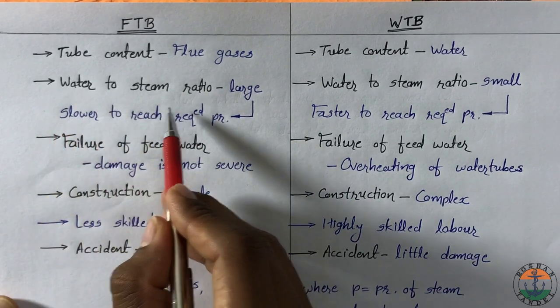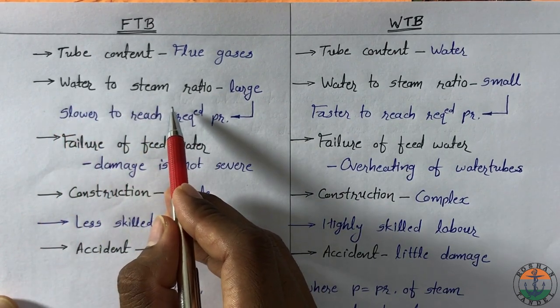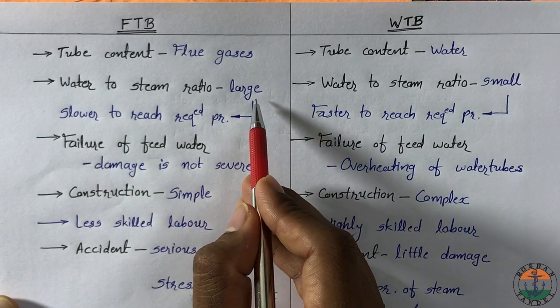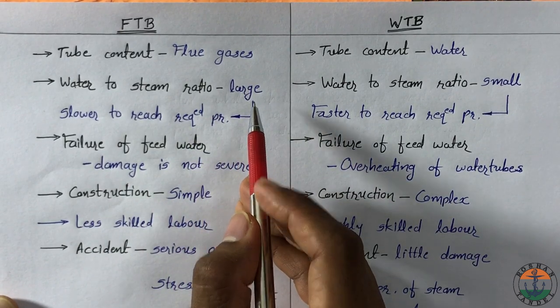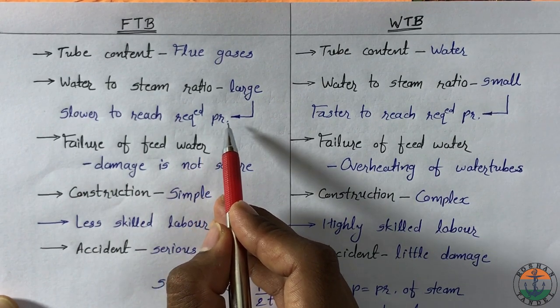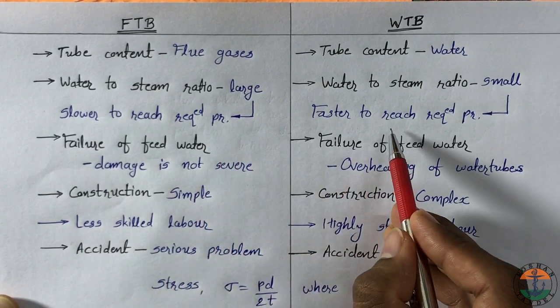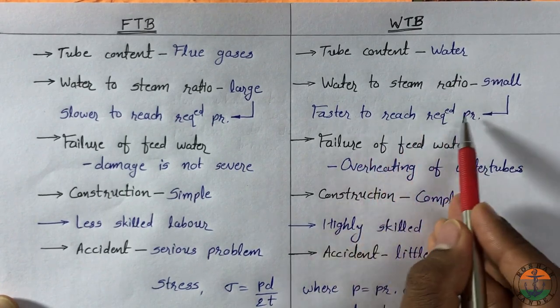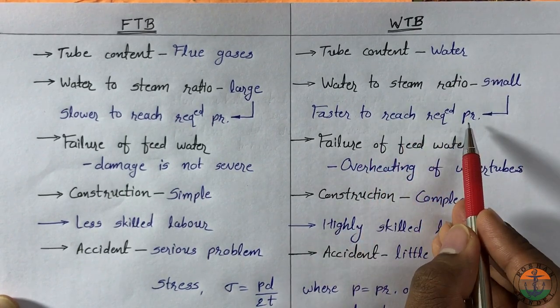In fire tube boiler, whole boiler shell is filled with water. It has large water to steam ratio which makes it slower in reaching the required pressure. Here small water to steam ratio helps in reaching the required temperature and pressure in short time.